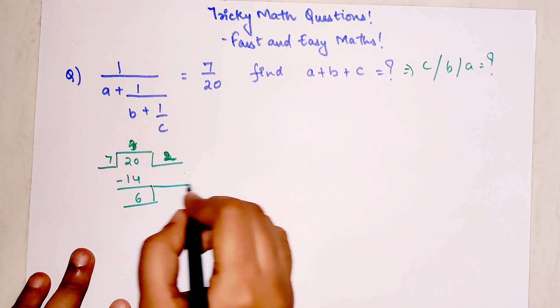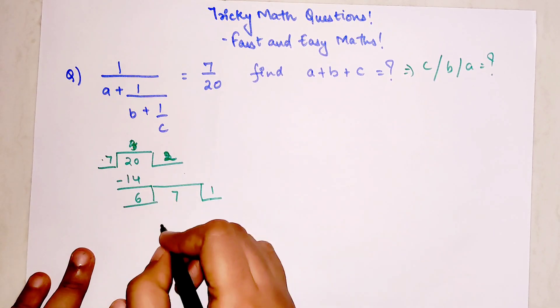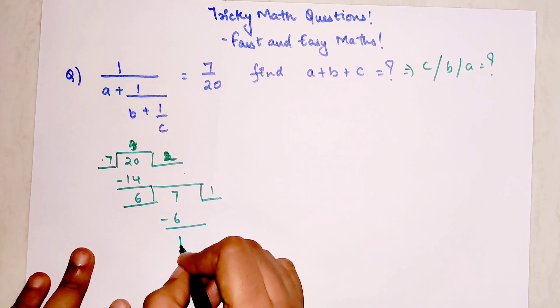So now what you will do is you will divide 6 and 7. So I can say 6 ones are 6. I am left with 1.